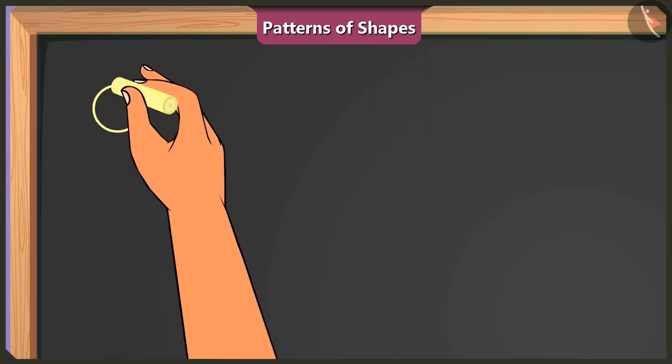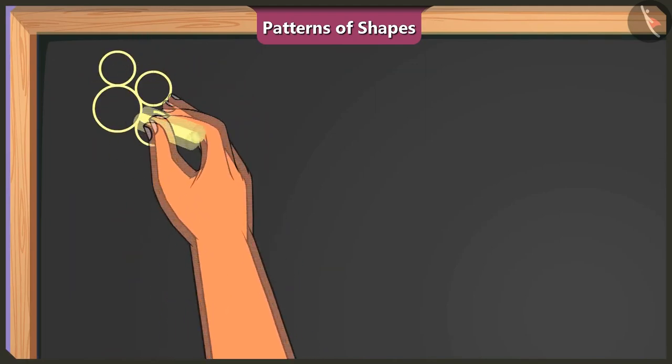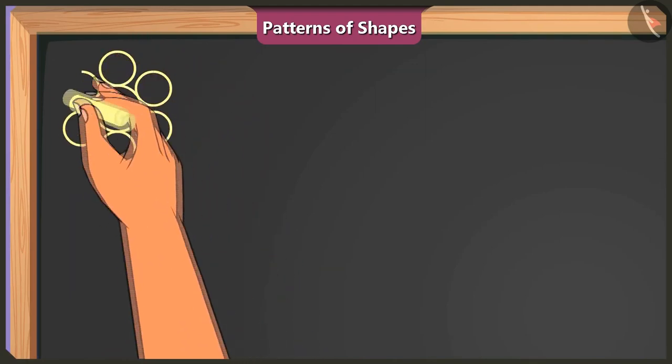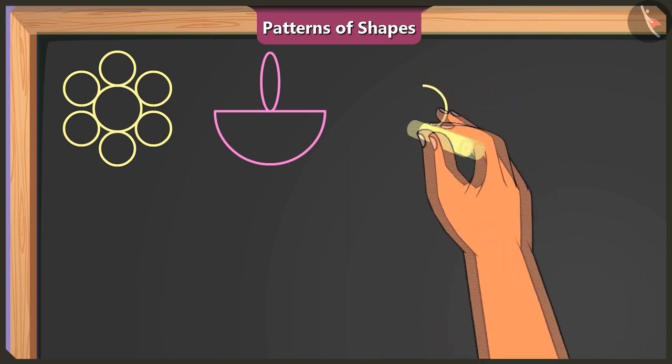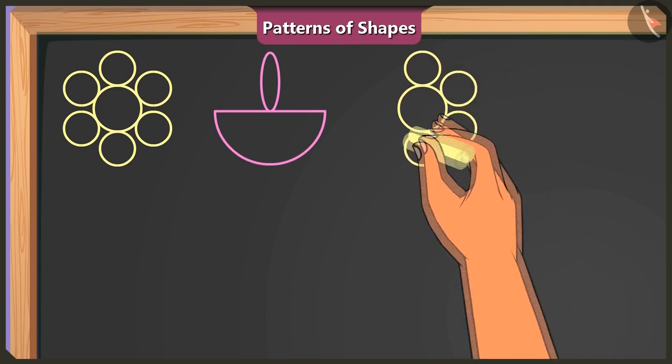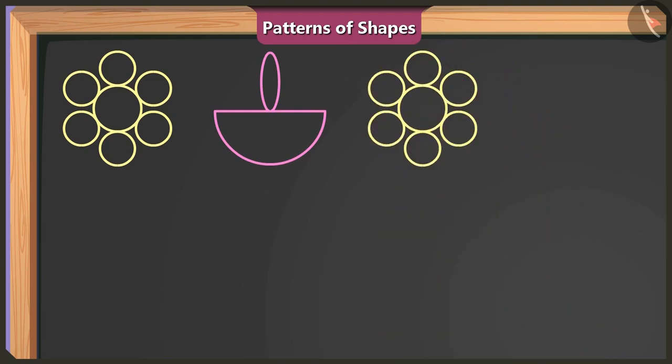On one corner of the board, we can use big and small circle shapes to make a flower. Next to this flower, I can draw a diya using a semi-circle and an oval shape in this manner. Oh, wow. Next to it, I'll draw another flower by using one big circle and some small circles. And I will once again draw a diya like this with a semi-circle shape and an oval shape.